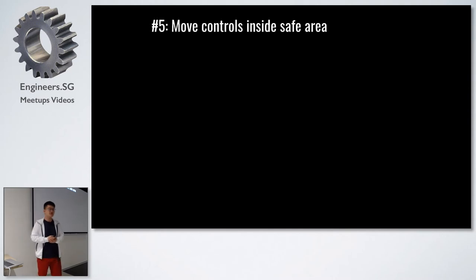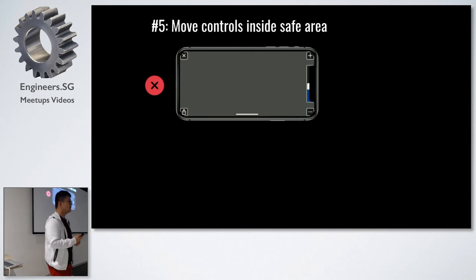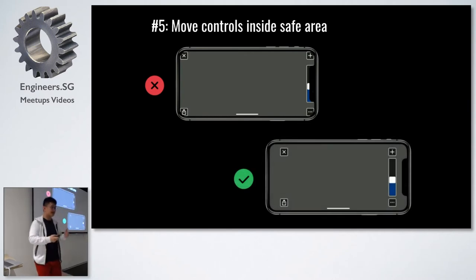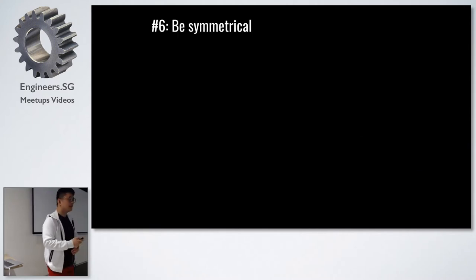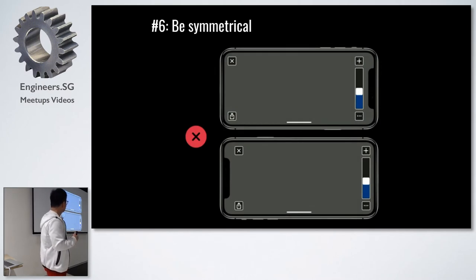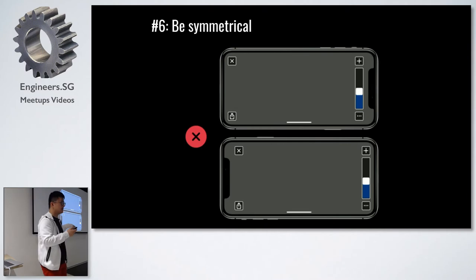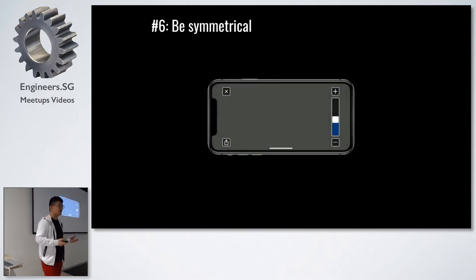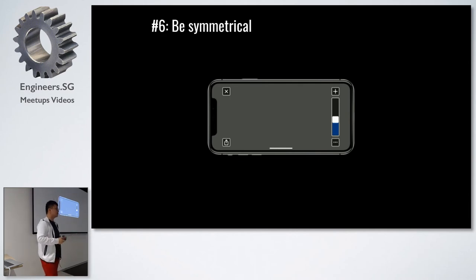The next suggestion: move controls inside the safe area. If you have a control at the edges of the screen, don't do this — the content of the control may be hidden by the rounded corners. Make sure you respect the safe area. Also, be symmetrical. If you look at an example, the buttons on the left have different distances from the left edge between portrait and landscape. This undermines users' ability to build muscle memory and will confuse them. Instead, make it symmetrical so no matter how the user rotates the phone, all your controls have the exact same distance from the edge.